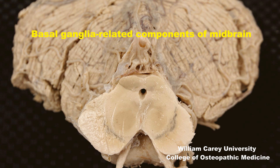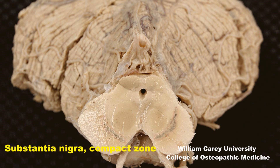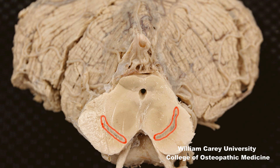Our journey regarding basal ganglia and related components now takes us to the midbrain. Here is a mid-rostral midbrain in cross section. Near the peduncular region, here is the substantia nigra compact zone, identified by these pigmented neurons. These neurons send dopaminergic projections to the previously covered dorsal striatum — the caudate and putamen.